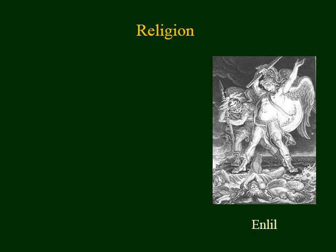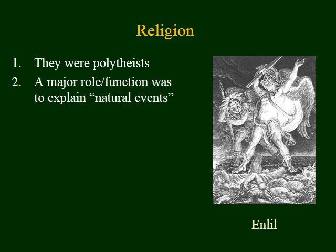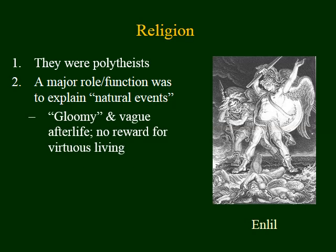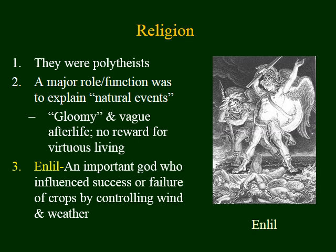If we were to look more specifically at their religion, we would learn that they were polytheists — the Mesopotamians believed in many different gods and goddesses. Possibly the major role of religion was to explain natural events, the creation of the earth and the universe, as well as the weather. They spent very little time concerned about the afterlife, in contrast to Christians, and there was no reward for virtuous living. The god shown here is Enlil, an important god who often influenced the success or failure of their crops because he controlled the weather.